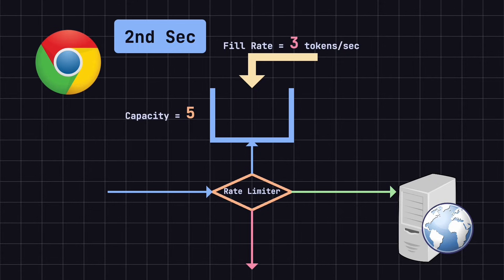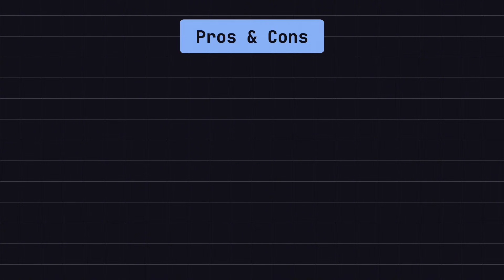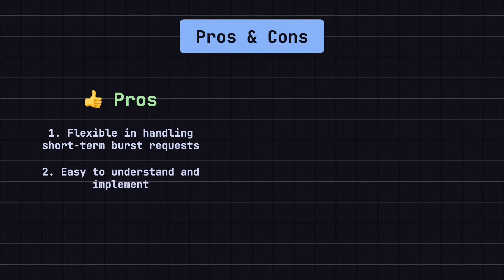At the start of the third second, the system generates 3 tokens again, so the bucket now contains 3 tokens. No new requests arrive during this second, so the tokens remain in the bucket. At the start of the fourth second, the system continues to generate 3 tokens. But since the bucket can hold a maximum of 5 tokens, it now contains 5 tokens, ready for the next requests. The advantage of the token bucket algorithm is that it offers some flexibility, allowing burst requests up to the bucket's capacity, making it suitable for handling short-term traffic spikes. Additionally, it is relatively simple and easy to understand and implement.